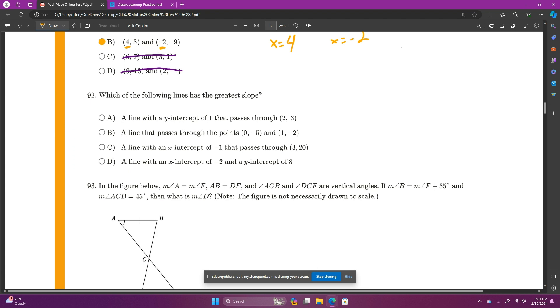Number 92 says, which of the following lines has the greatest slope? So, we need to find the slope for A, B, C, D, and which one has the greatest value. So, I'm just going to put M equals, M equals, M equals, and M equals. So, if my y-intercept for A is 1. So, answer choice A may work. Y-intercept is 1. So, that means when x is 0, y is 1, and it also has the point 2, 3. And our slope formula says change in y over change in x. And my y goes up 2, and my x goes over 2. So, my slope is 1, not a very big slope.